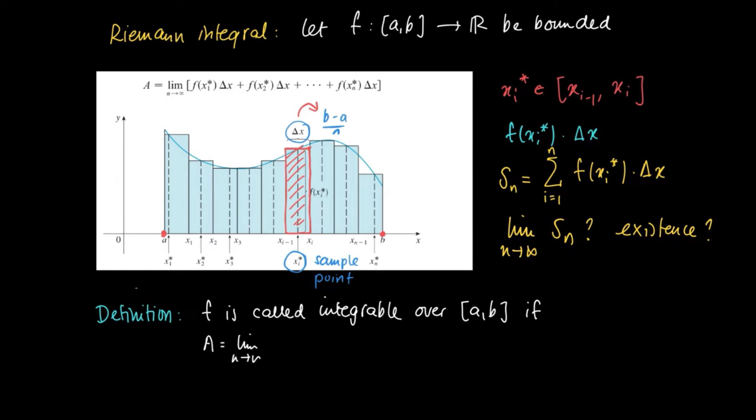If the limit a equals the limit as n approaches infinity of S_n, which is the limit of the sum of predefined surface areas of rectangles, the sum from i = 1 to n of f(x_i*)Δx, when this exists...